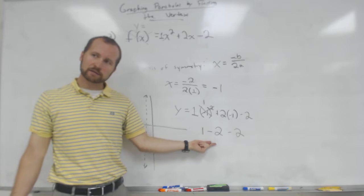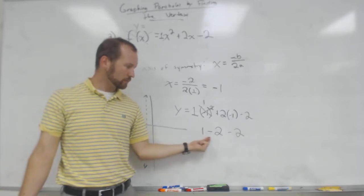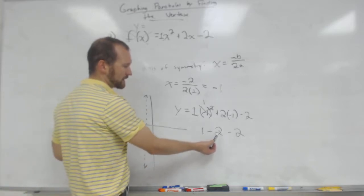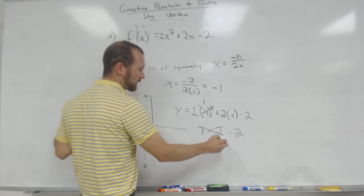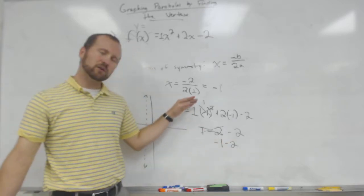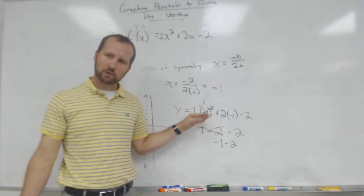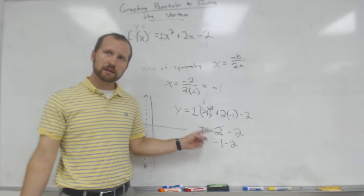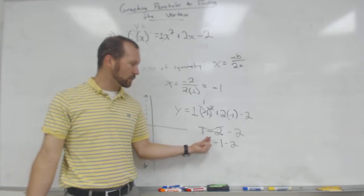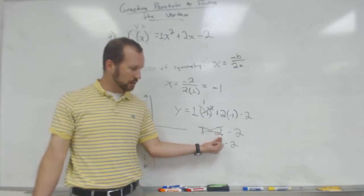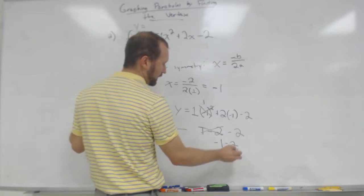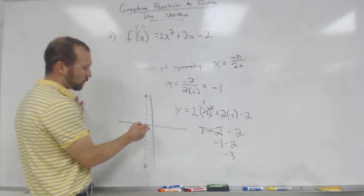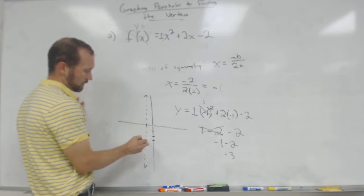Every time you plug in your x, those first two terms are opposite in sign and one is twice as big. So we get 1 and -2 — these two become -1. Then minus 2 gives us -3. That's a quick check as you work: if I had 3 and -2, that's not following the pattern, because it's not 1 and -2. The last term just shifts the parabola. So my vertex is (-1, -3).